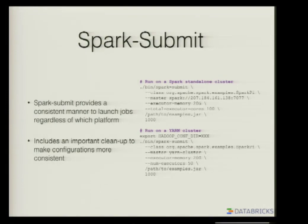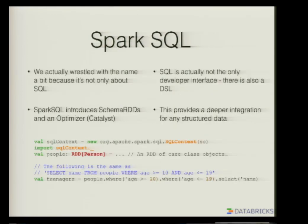That same process I used there is more or less the same script you'd use to submit to other cluster managers. In this example, the two variations: for standalone cluster, instead of the master being local, it uses a Spark URI. In the second example, instead of using the URI, it says the master is yarn-cluster, which means use the local Yarn configuration to submit your application — to understand where the resource manager is. Spark Submit was a really important way for us to unify the different ways to submit jobs, new as of Spark 1.0 — very key to the concept of write once, run anywhere.